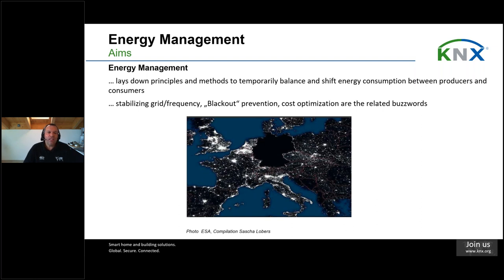There are two issues. First, we need to shift energy between producers and consumers, and that has cost effects — that's the reason we want to be cost efficient. And next, we have the subject of blackout prevention to stabilize the grid. So with cost efficiency and grid stabilization, we ensure that the providing of energy to all participants and home domains is ensured. These are the two principles, and energy management must be especially considered in the next years.